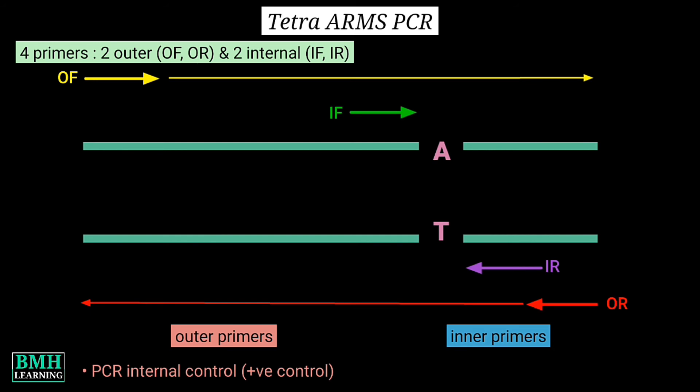Inner set of primers, that is internal forward and outer reverse, and outer forward and internal reverse primers, give rise to allele specific amplified products or amplicons. These allele specific amplicons are of varying sizes and thus can be easily differentiated and discriminated on gel electrophoresis.